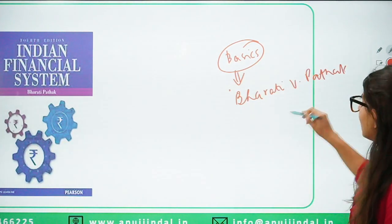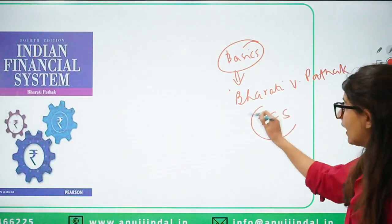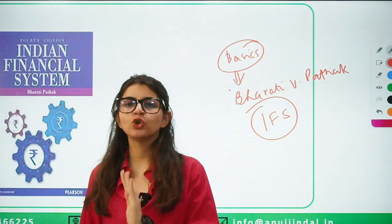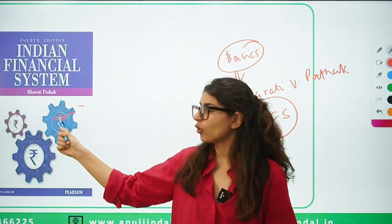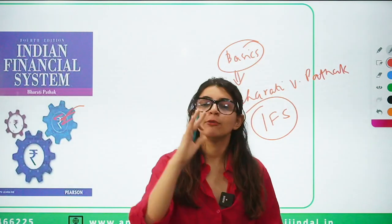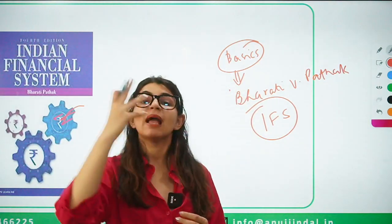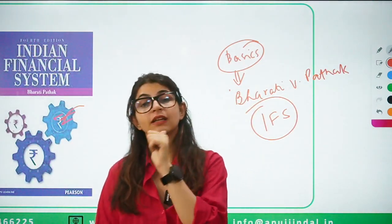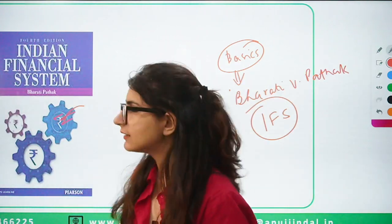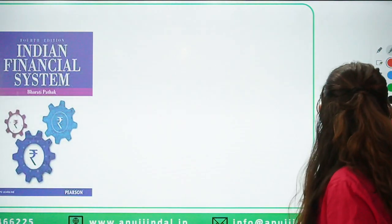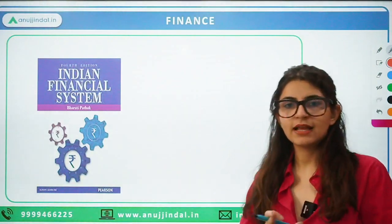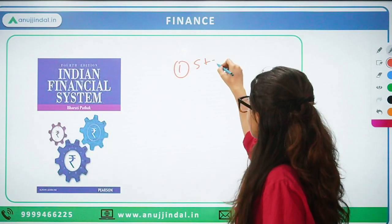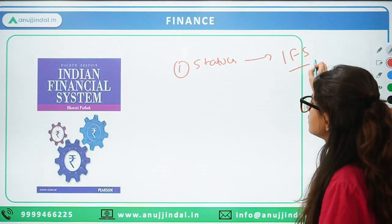The Indian Financial System book by Bharti Pathak is a very bulky book — do not read the entire book. Go through your syllabus first, match it with the contents of the book, and study only the important topics that RBI asks about. Look at previous year questions to understand what kinds of questions RBI has asked from finance. There are two parts: first static, then current. Cover the static from this Indian Financial System book first.